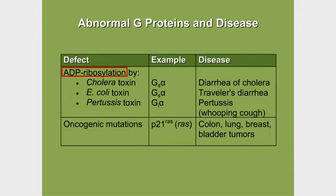Now, the G protein targeted is specific to which toxin is present. Cholera toxin ADP ribosylates GS — specifically alpha S of GS is ADP ribosylated. E. coli toxin also, just like cholera toxin, ADP ribosylates alpha S of GS.